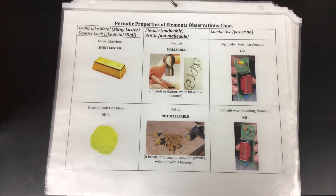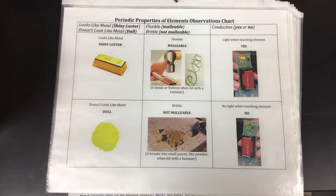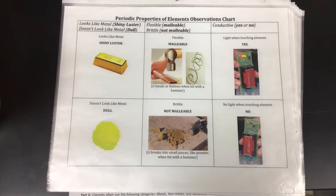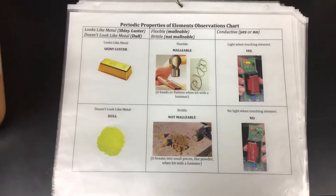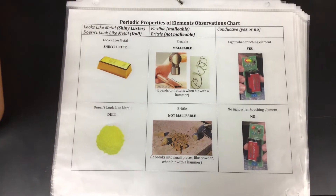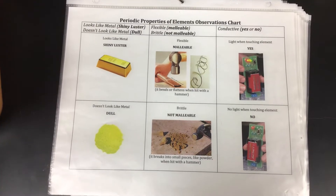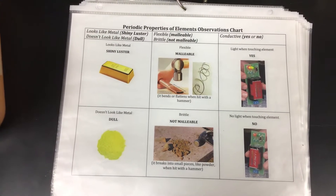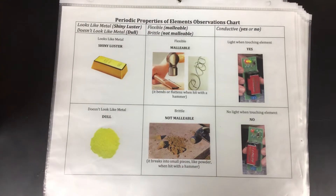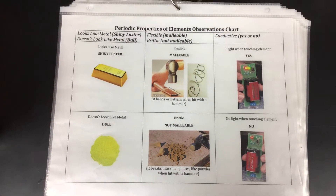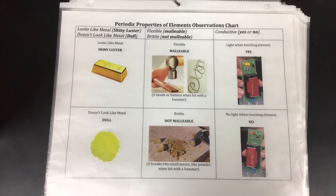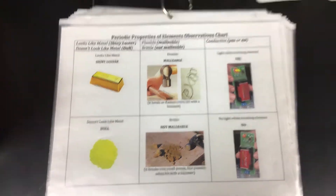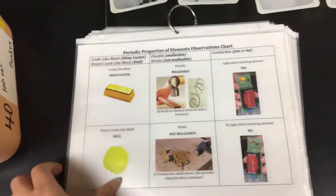Conductive is tested using a conductivity tester, which lights up if electricity is flowing through it by being connected to the element. The light will light up if it is conductive, and will not light up if it's not conductive. These are the properties we are going to be evaluating for each element.